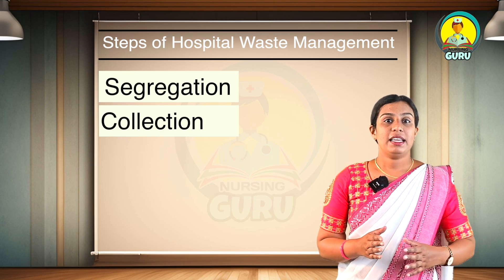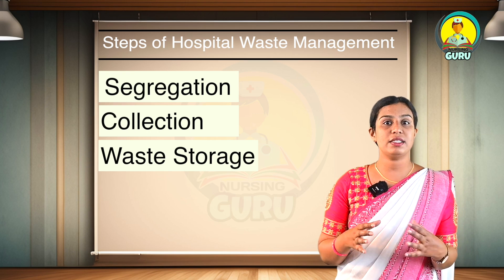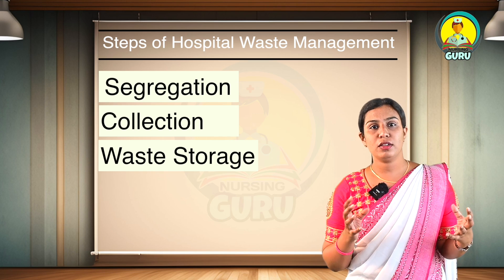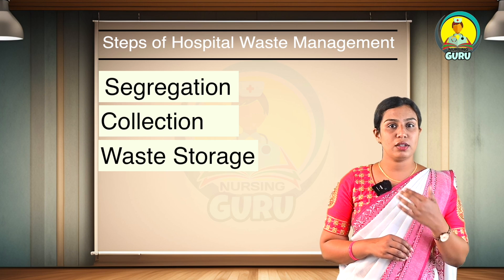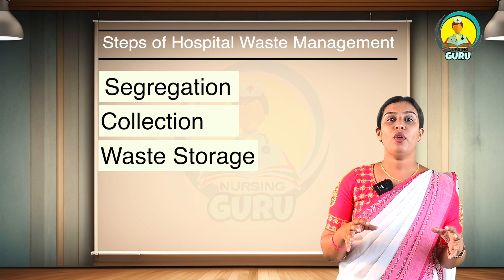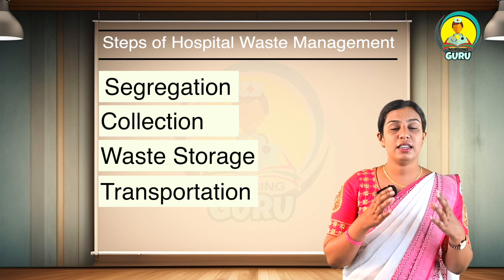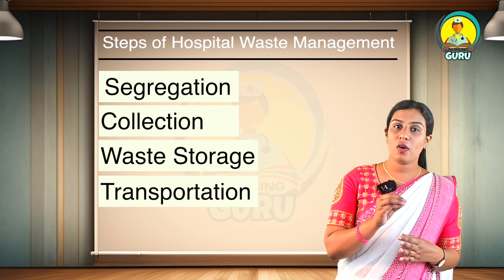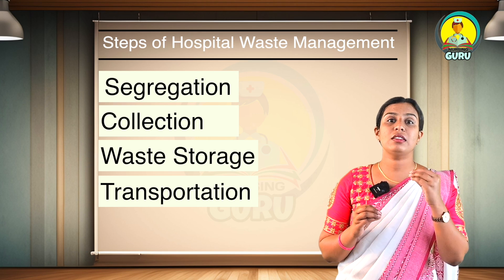The third step is waste storage. Storage facilities are located within the hospital premises or outside the main building. There may be a separate pathway in the hospital building to carry the waste to the storage area. It should have easy access for vehicles and not be accessible to unauthorized persons and animals. The fourth step is transportation: offsite transportation is arranged by the concerned municipal or local authority, and waste is transported in a closed, specially designed vehicle under the supervision of the waste medical officer.